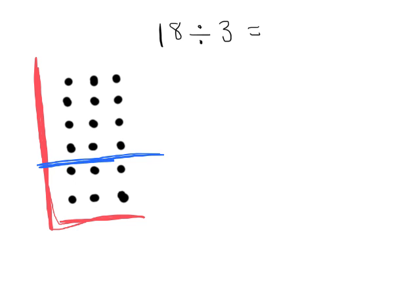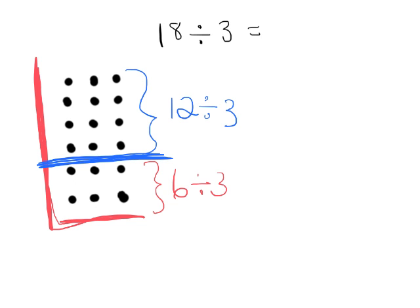We could call this, let's see, 12 divided by 3, and we can make this 6 divided by 3. So what that means is, using the distributive property, 18 divided by 3 really could be 12 divided by 3 plus 6 divided by 3.